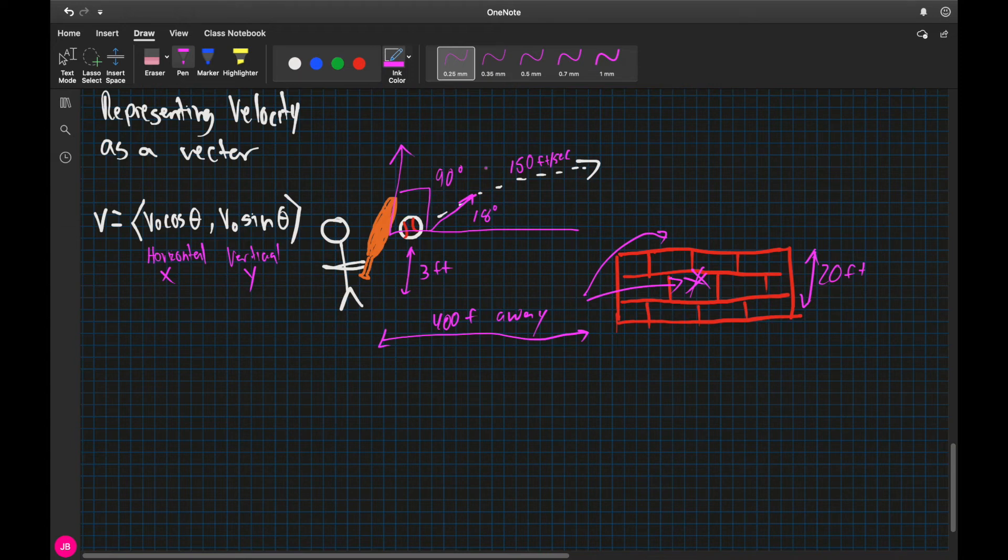So now, my initial velocity up is no longer going to be the 150 feet per second. Because remember, we have the formula for y. y is equal to my negative 16t squared, which is gravity. We already explained that part, plus we can't go ahead and put 150t. We need to go ahead and factor in the angle. So it's going to be 150 feet per second times the sine of 18 degrees.